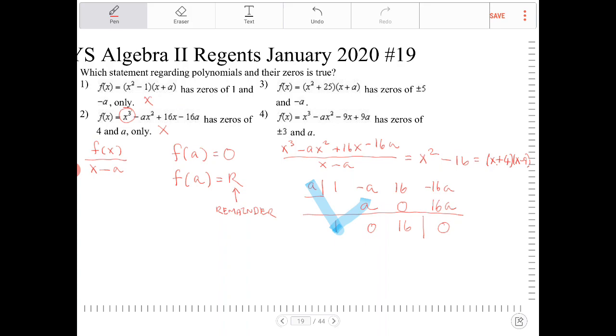Let's take a look at option 3 now. So I have f of x is equal to x squared plus 25 times x plus a, has 0s of plus or minus 5 and negative a. Well, negative a certainly works. However, x squared plus 25 is prime. I cannot factor that any further. So it's not plus or minus 5. And as a matter of fact, if you place plus or minus 5 in, you can see that it doesn't give you 0. So this is not good either.